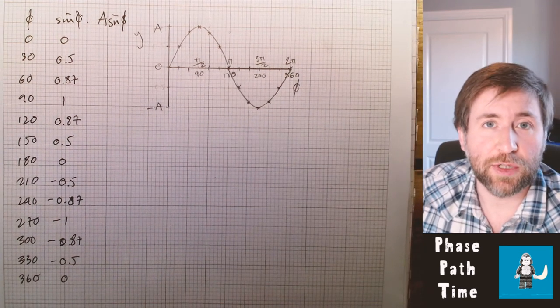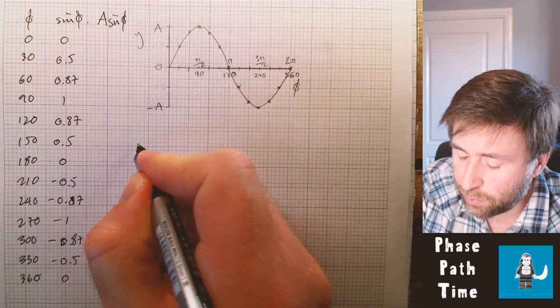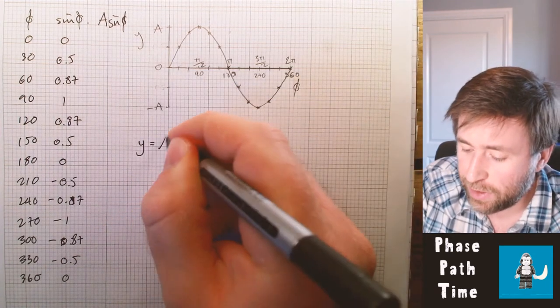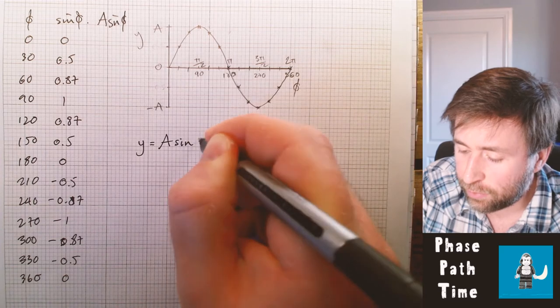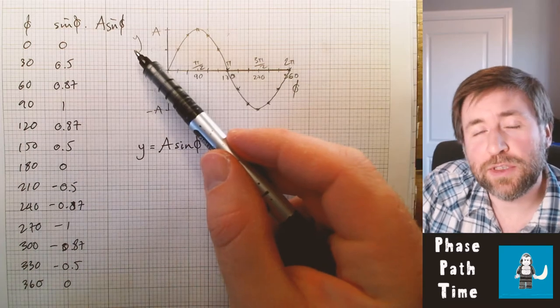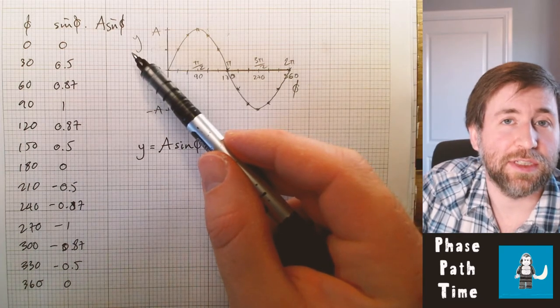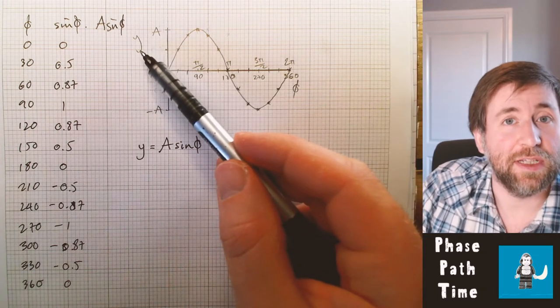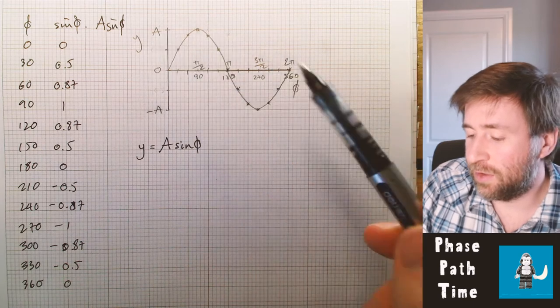This gives us our first and really useful equation, which is for the amplitude of a wave, the displacement y at any point is equal to the amplitude sine of the phase angle. Confusingly, sometimes we do use x as being this quantity here, because that's our basic term for displacement. And this is a graph of displacement in the direction of the oscillation versus the phase angle.